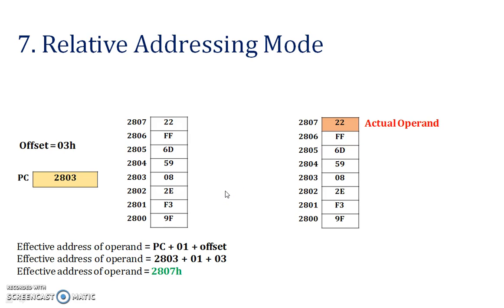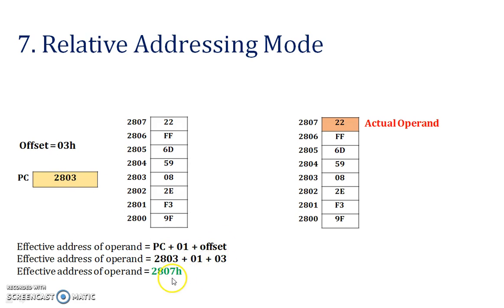Here is another example for relative addressing mode. The program counter value is 2803, 01 is already given in the equation, and the offset is 03. So 2803 + 01 + 03 = 2807. This is the actual operand, and 2807 is the effective address.